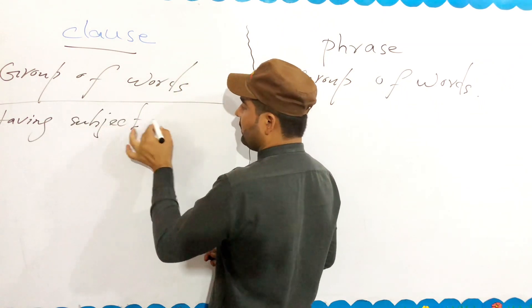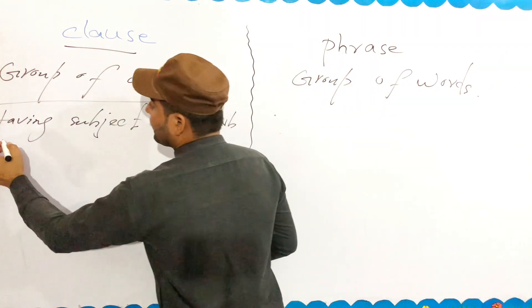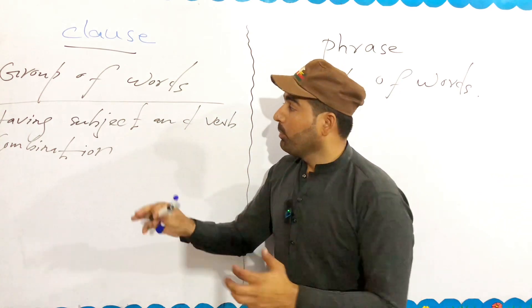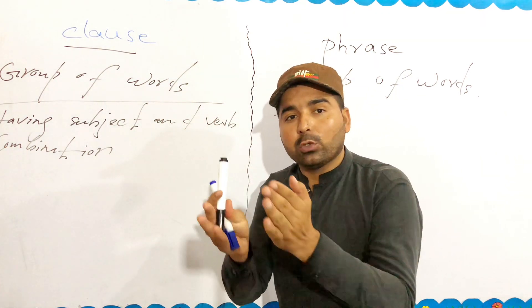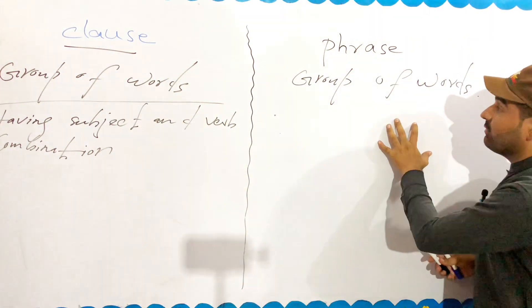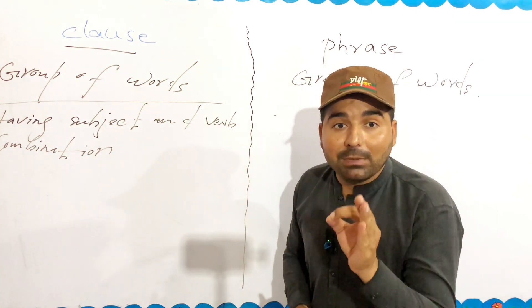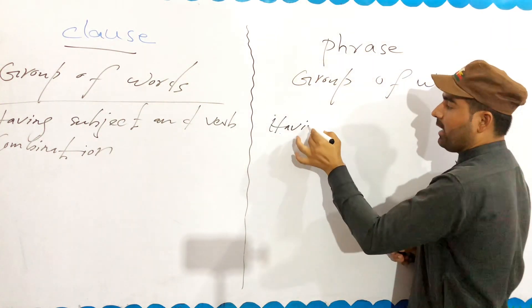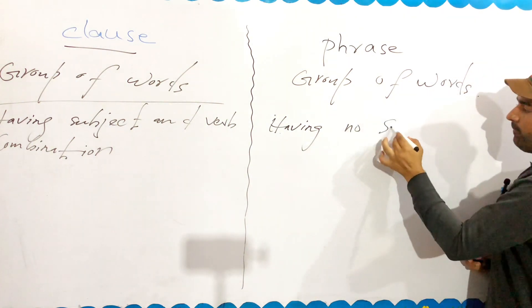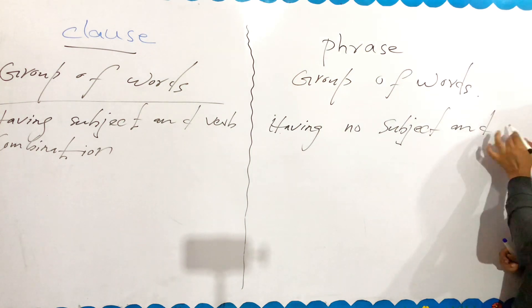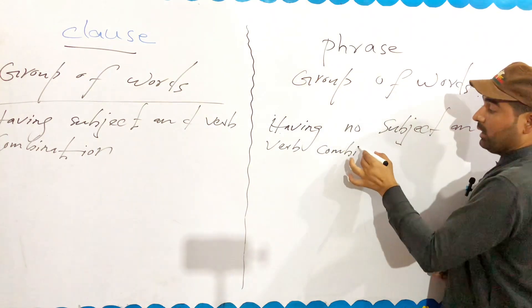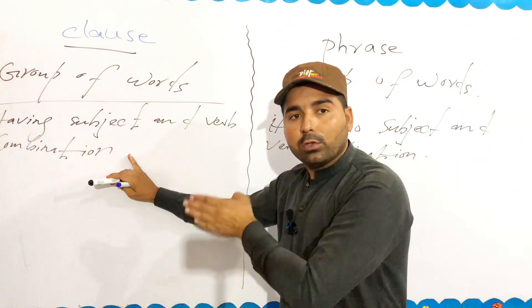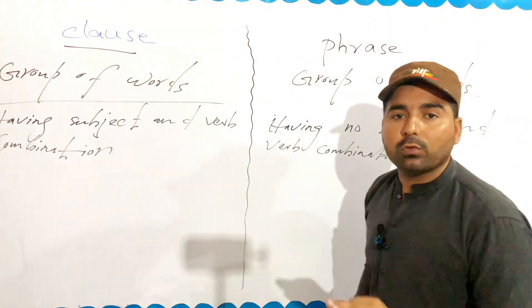Subject and verb combination means a group of words with subject and verb. If a group of words has subject and verb, then it's a clause. Phrase is words having no subject and verb combination. If you have a subject or verb combination, if you have a group of words with subject and verb, then you have a clause. If you have no subject and verb, then you have a phrase.